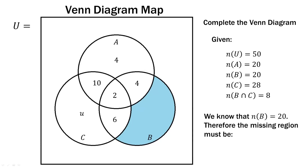Now let's find the missing part of B, which is W. We know that B has to equal 20. Therefore, the missing region is 20 minus the 6 we just found, minus the 2, minus the 4 we already knew. So 20 minus 6 minus 4 minus 2 equals 8. So the missing part of B is 8.